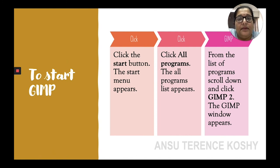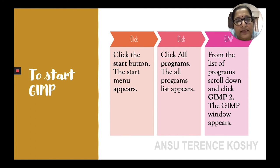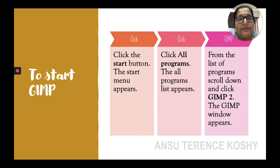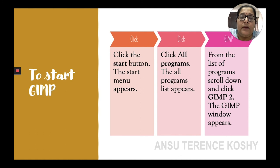Next we need to learn how to start a GIMP program. First, click on the Start button, which is found in the bottom left corner of your desktop. A list will come up — click on All Programs. From that list, look for GIMP 2. As per your textbook this is GIMP 2, but newer versions are available now, so the version number will be more advanced if you download it.